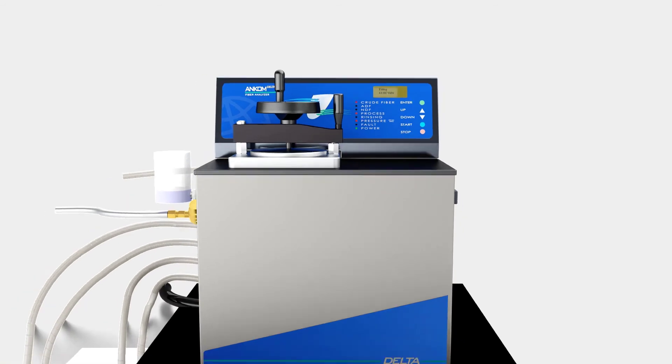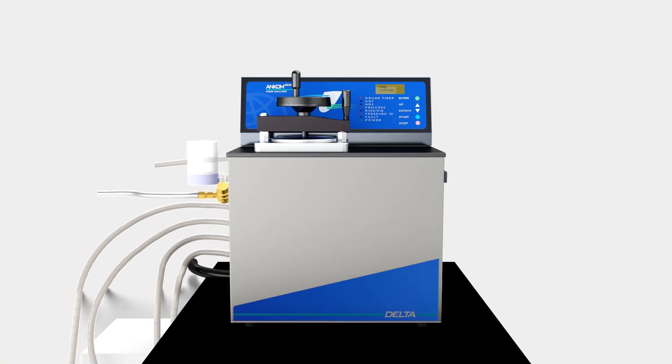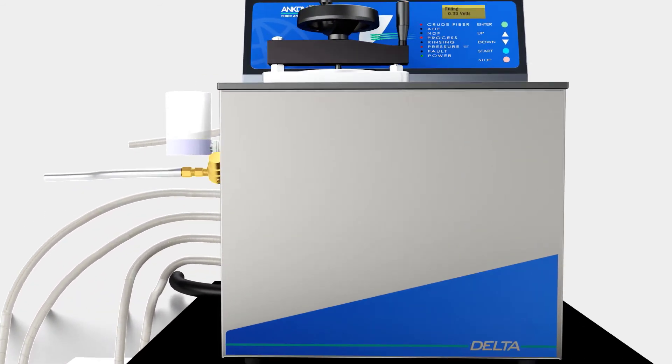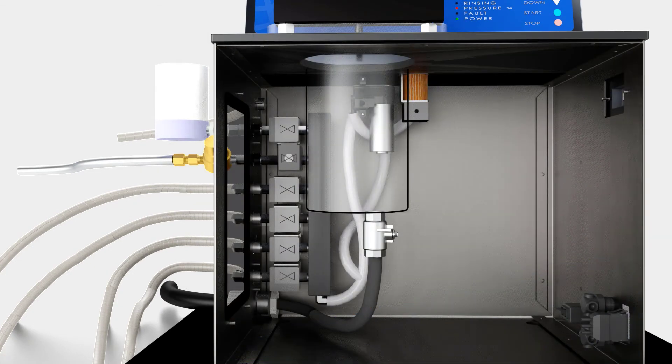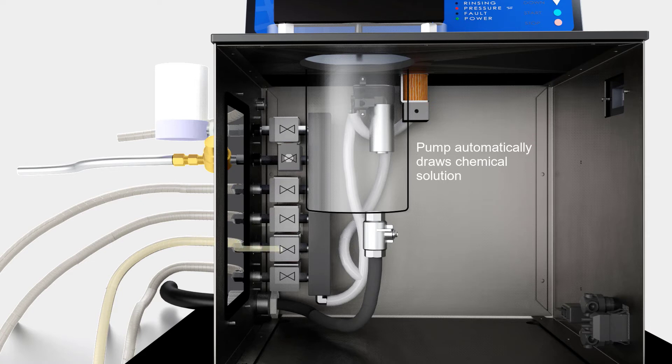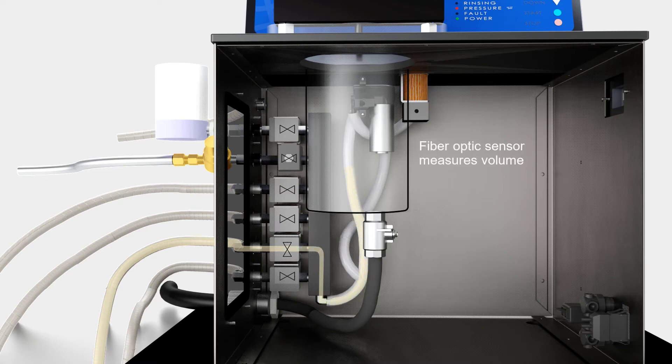The Delta's internal pump system automatically draws the appropriate chemicals in the program sequence per the selected method. One of the five solution valves opens to allow the pump to draw the required chemical. A fiber optic sensor indicates when the correct volume of solution has been delivered and the vessel is full.